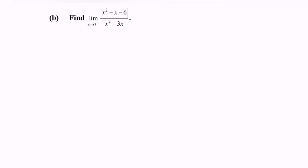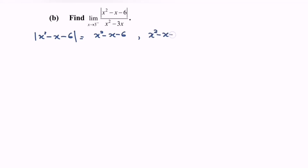Kindly focus on part (b). Find the limit when x approaching 3 from the left for the function modulus of (x² minus x minus 6) over (x² minus 3x). Before we begin the discussion, kindly focus on the modulus. Based on the definition, where we have the modulus of (x² minus x minus 6): the definition will be (x² minus x minus 6) with domain where x² minus x minus 6 is less than 0.